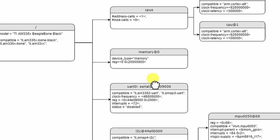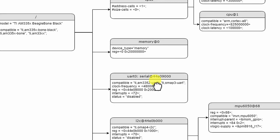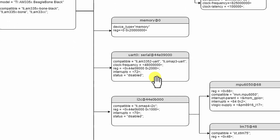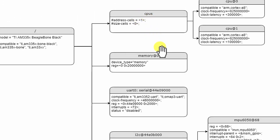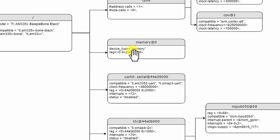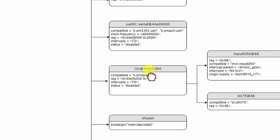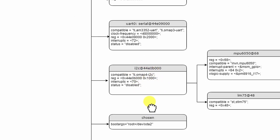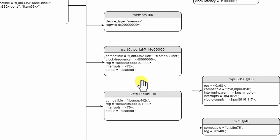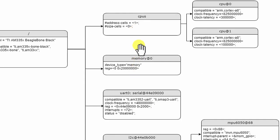Here you can see these are the root level nodes. There is a CPU node, a memory node to explain the memory of the hardware, a UART node to explain the UART controller of the hardware, and an I2C node which explains the I2C peripheral of the hardware. All these are root level nodes.